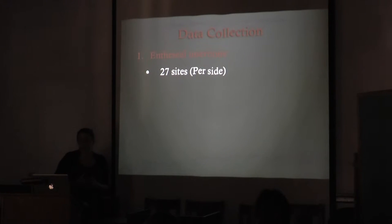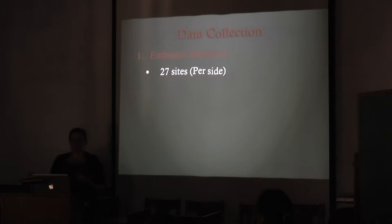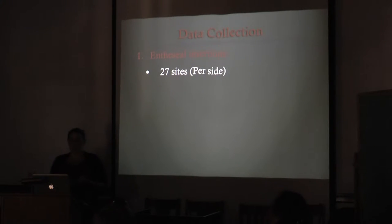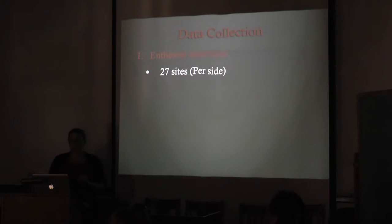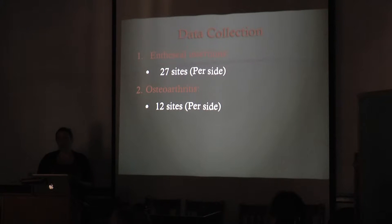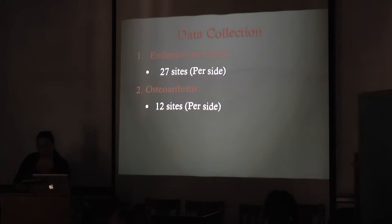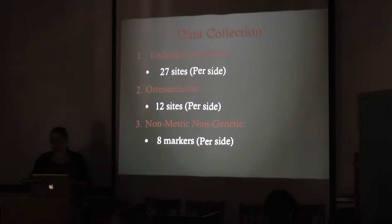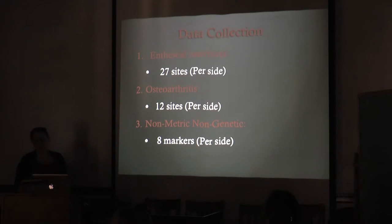All in all, I collected data from 27 different muscle insertion sites per side, chosen from across the body to represent a wide range of movement and ascertain information on repetitive activities and micro and macro trauma. I also examined 12 different surfaces per side representing the major appendicular joints for any signs of osteoarthritis. And finally, I looked for eight different non-genetic non-metric traits, again chosen based on the strength of previous research supporting their correlation with habitual movement.